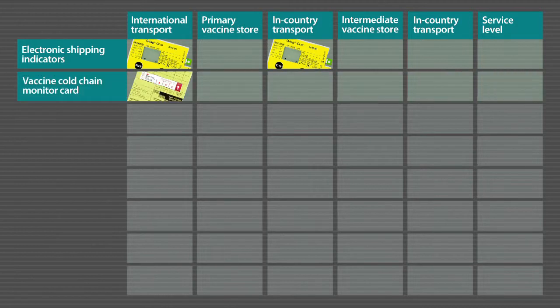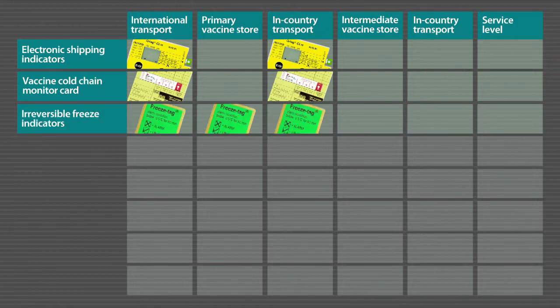Cold chain monitor cards are only recommended for dry-ice-containing vaccine shipments, and they are used at the same levels as electronic shipping indicators. Irreversible freeze indicators are used at all levels of the cold chain. However, their use in international shipments is redundant because electronic shipping indicators already have a freeze alarm, so there is no need to include another device with the same functions.